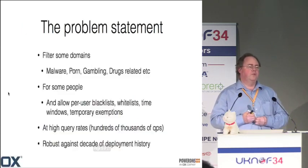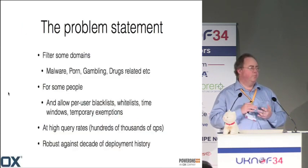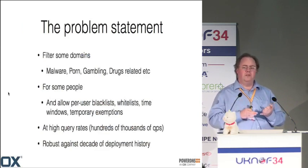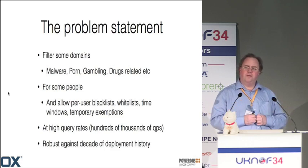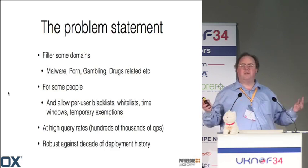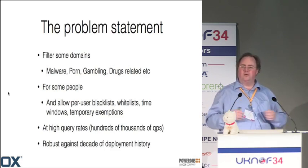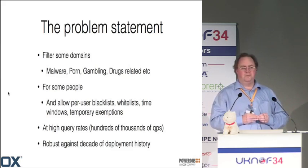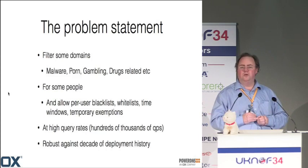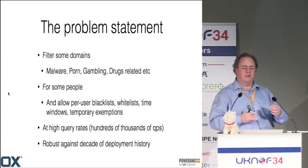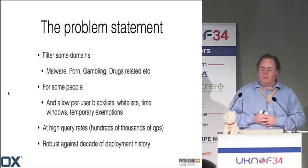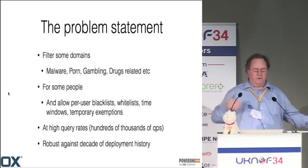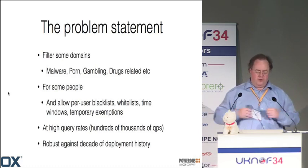The problem statement is really: filter some domains — maybe malware, porn, gambling, drugs. Some filtering categorization list providers, like OpenDNS, have 25 categories of internet you can filter, including some amazing ones like government information. But you don't want to filter everything for everyone — you want to filter some stuff for some people. Because you have to do it, at least try to do it well.